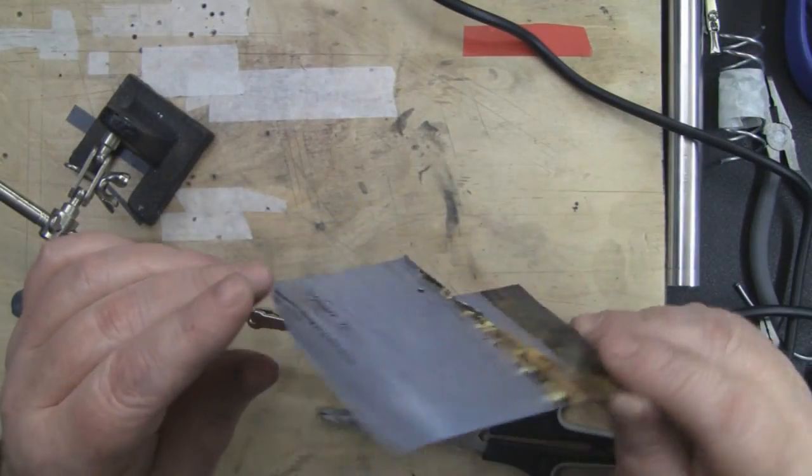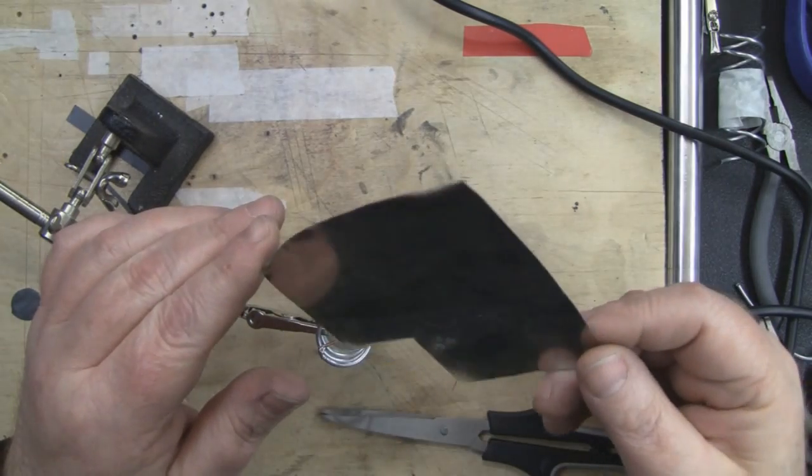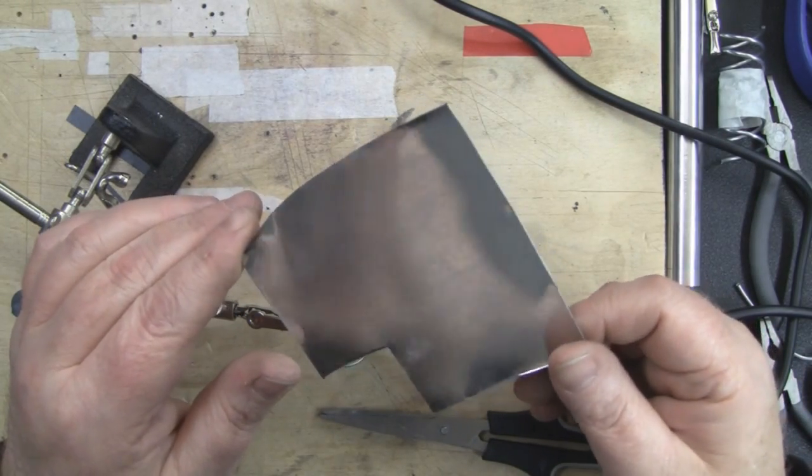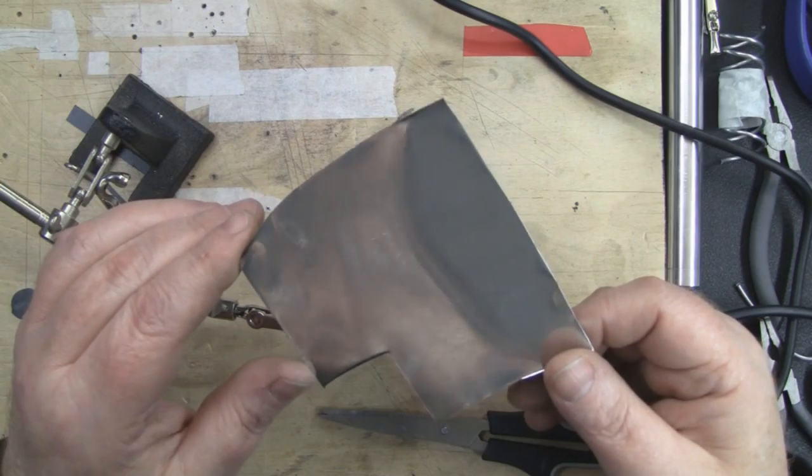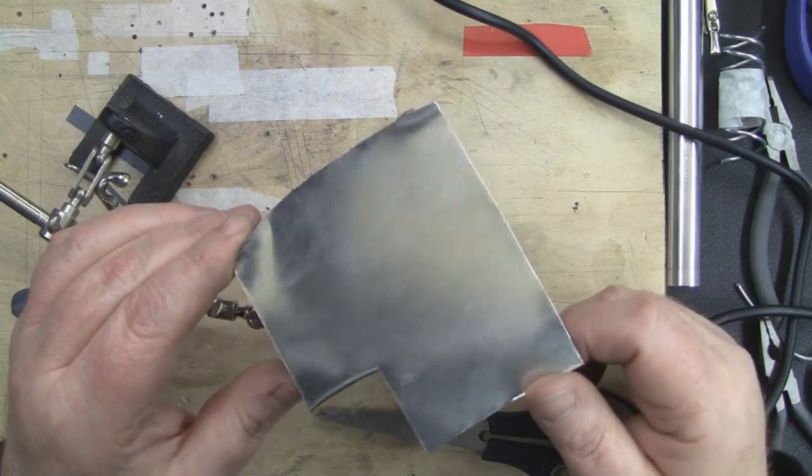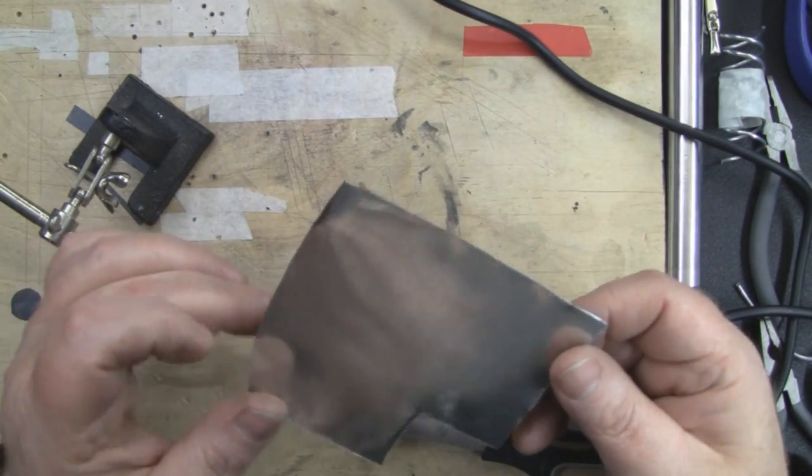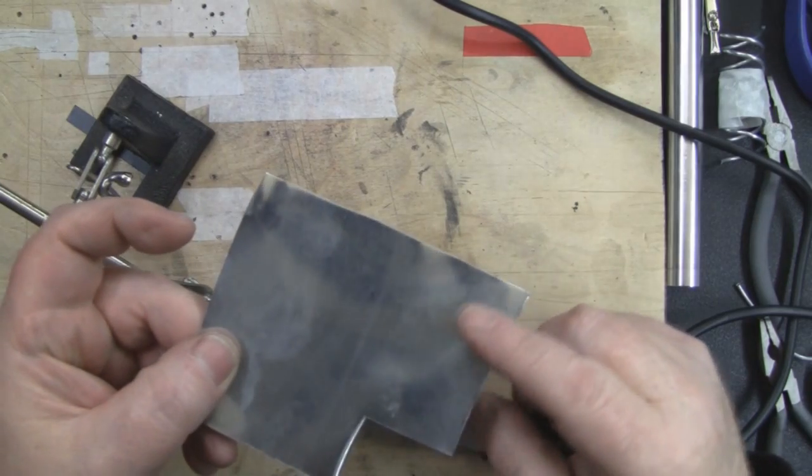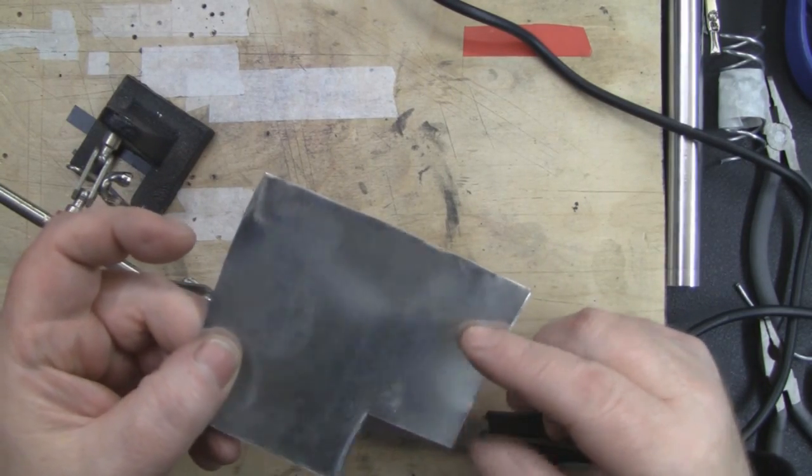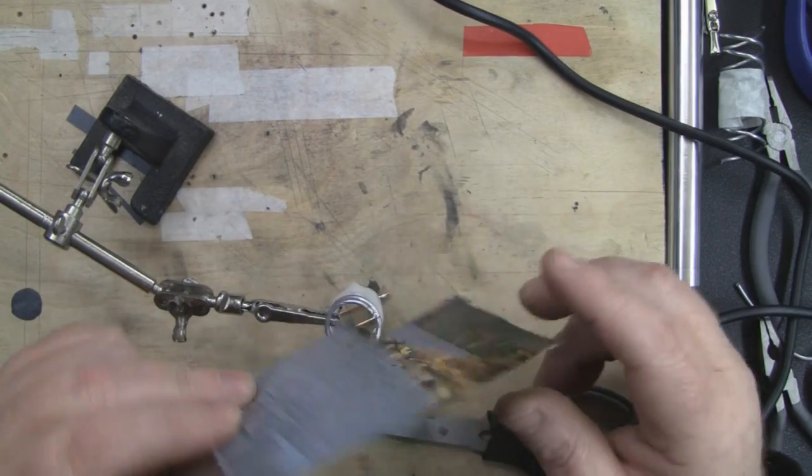Next you want to get yourself a piece of tin from a sweet tin or a cookie tin, something like that. It needs to be tin because we need to solder this in place so you can't use aluminum. I'm going to get some emery paper and rub off the varnish that is on this piece of tin and the paint on the top.